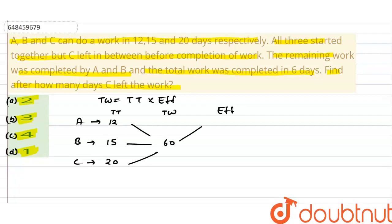अब 60 work आने के बाद हम efficiency निकाल सकते हैं उपर वाले formula से। तो A की efficiency हो जाएगी 60 divided by 12, that is 5। इसी तरीके से B की efficiency होगी 60 divided by 15, that is 4। और C की efficiency हो जाएगी 60 divided by 20, that is 3।